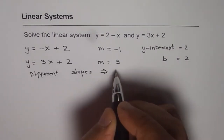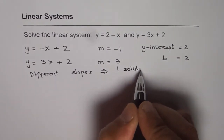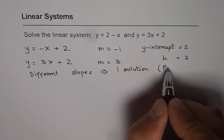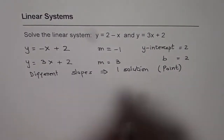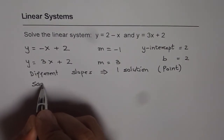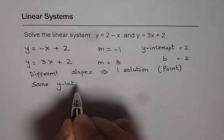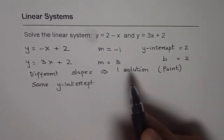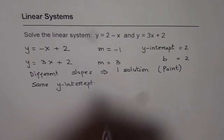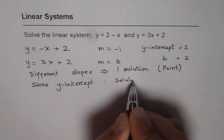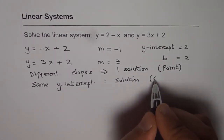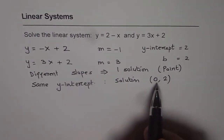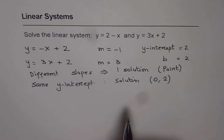Different slopes implies that we have one solution, meaning the two lines will intersect at exactly one point. Since both equations have the same y-intercept, we need not do any calculations or graph the functions. The solution is the y-intercept itself, which is the point (0, 2), since the y-intercept is the value of the function at x equals 0.